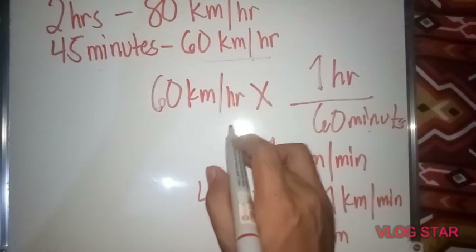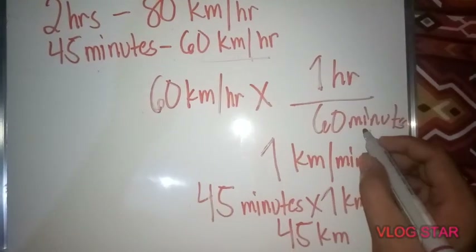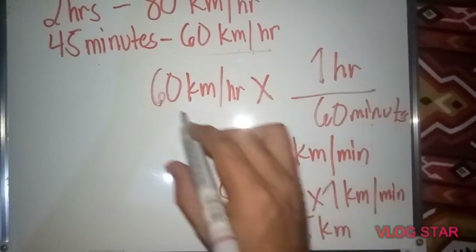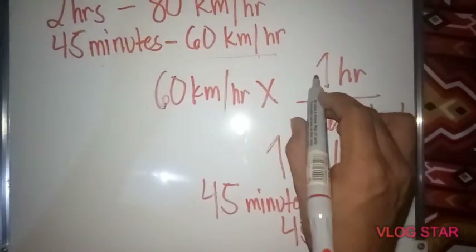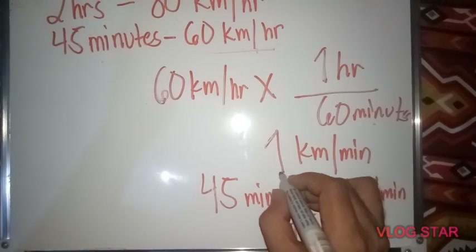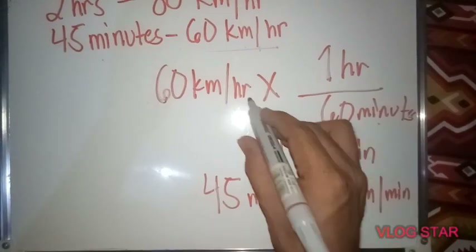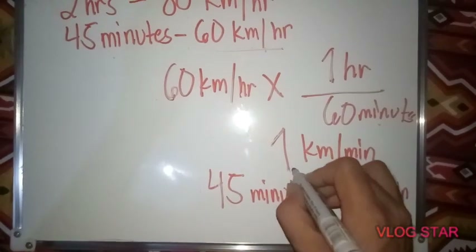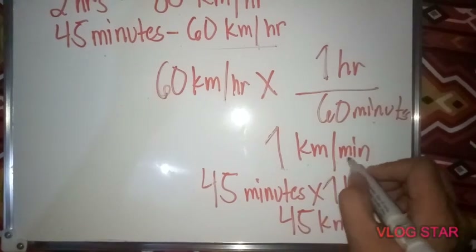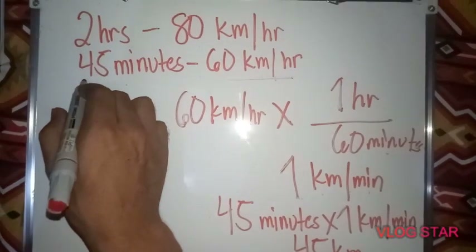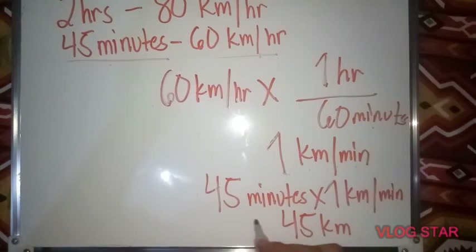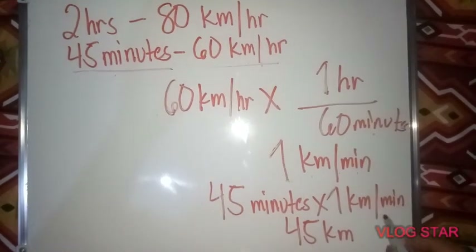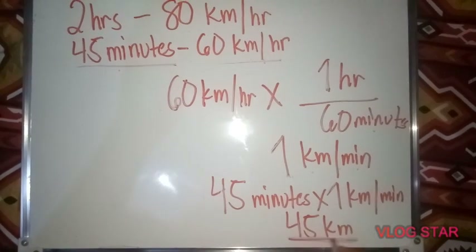So: 60 km per hour times 1 hour over 60 minutes, because in 1 hour there are 60 minutes. Solving: 60 times 1 divided by 60 equals 1, cancel the hour unit, giving us 1 kilometer per minute. Since we have 45 minutes, 45 minutes times 1 km per minute equals 45 km.